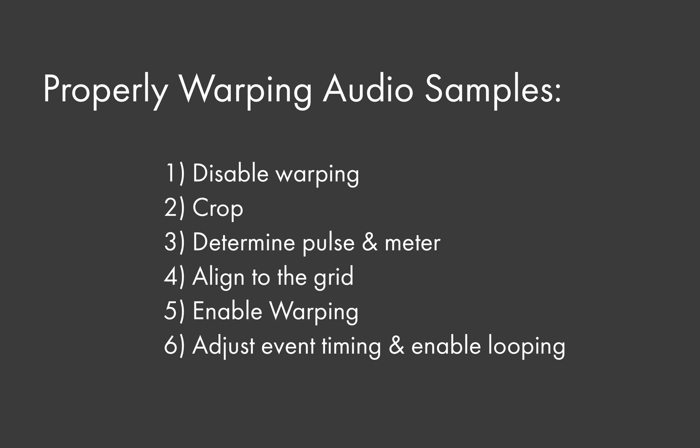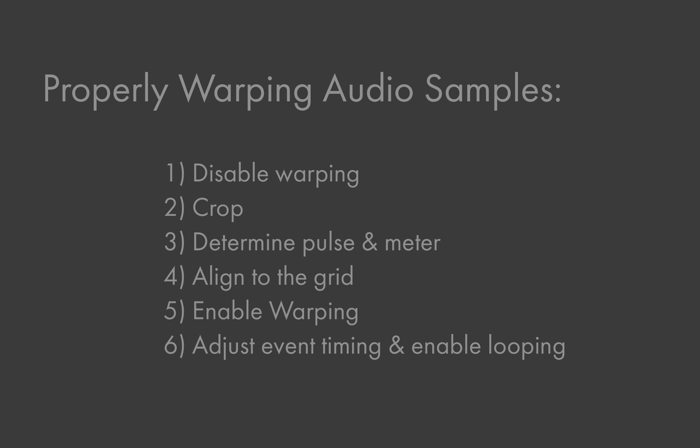In this video I'll be discussing the six steps necessary to properly warp an audio sample. These six steps are: 1. Make sure the sample is not already warped, 2. Crop the sample to just the portion you want to use, 3. Determine the pulse or the meter of the sample, 4. Align the sample to the grid, 5. Warp the sample, and 6. Make any necessary adjustments or turn on looping.